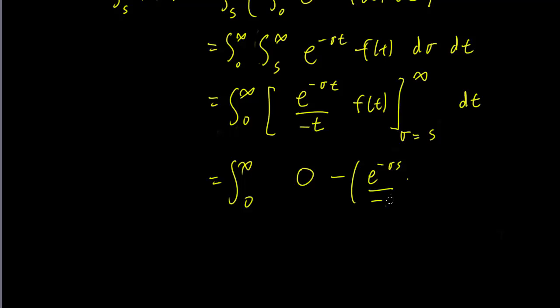Remember that we are integrating over sigma, so this is going to be minus st over minus t, times f of t. This is a very common mistake to make, so watch out for it. We are integrating over sigma, so the t is a constant, and we shouldn't change anything that has a t in it.